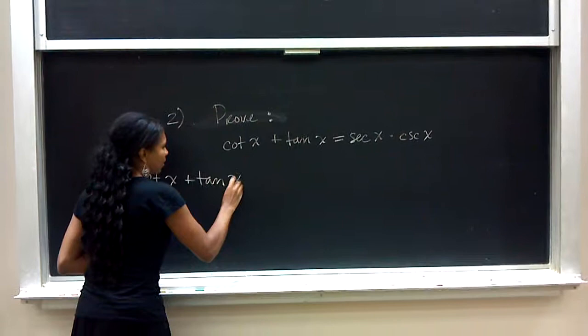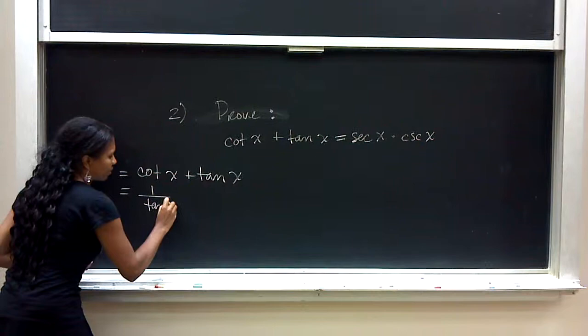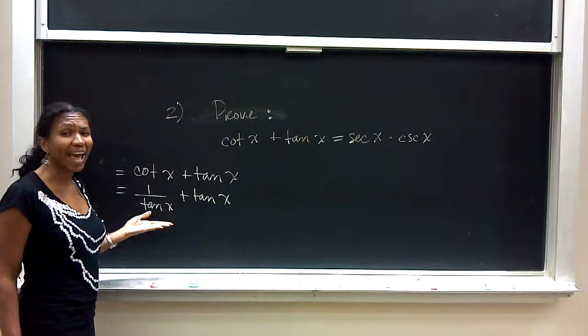Cotangent x plus tangent x can be rewritten. This is 1 over tangent x plus tangent x.